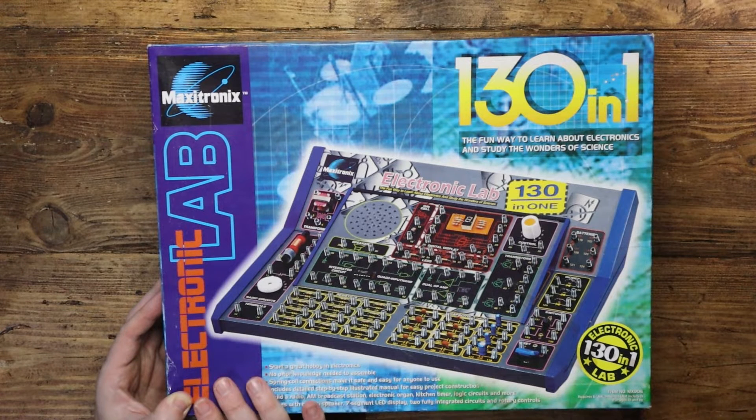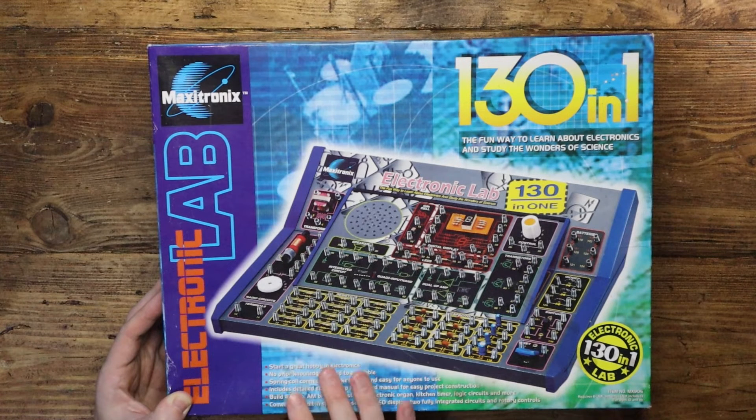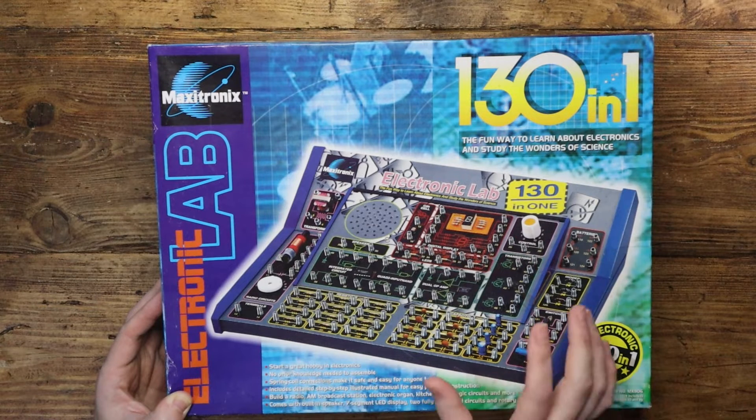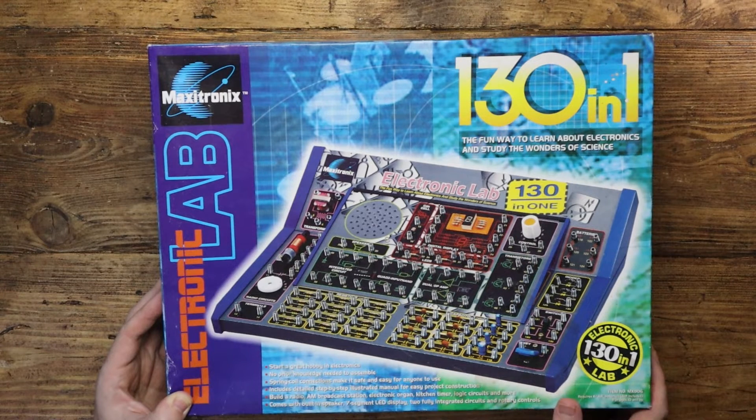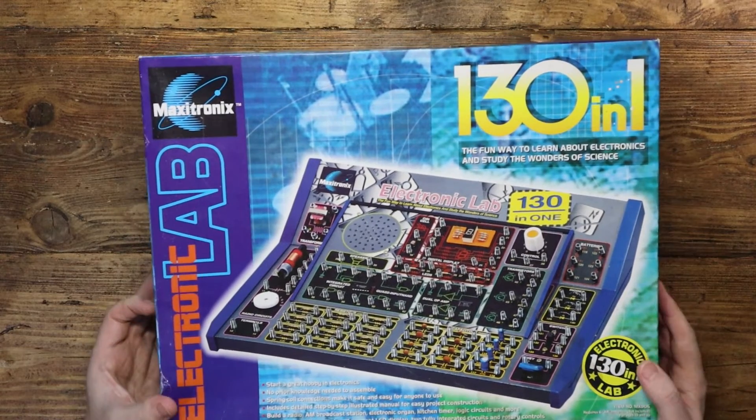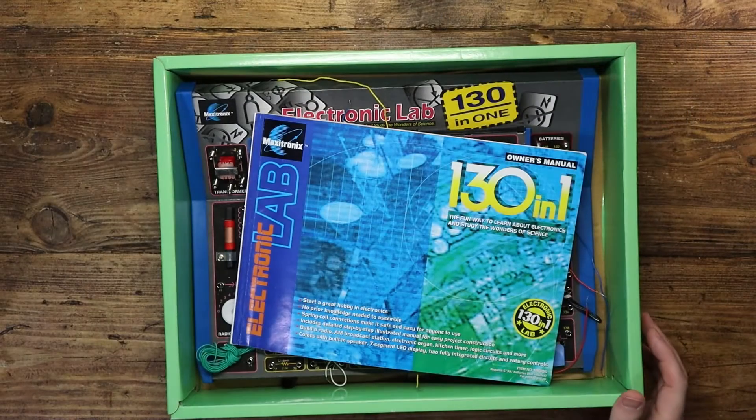These came in loads of different sizes, this is sort of like a mid-range one I would say. You'd get ones and they'd be like 75 in one or 50 in one and there's a quite a fancy looking one which is 300 in one that'll keep you going. Let's open it up and see what we've got.